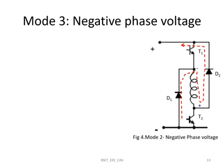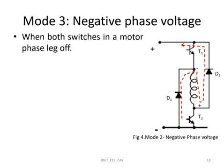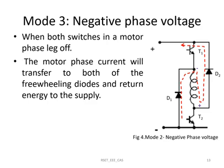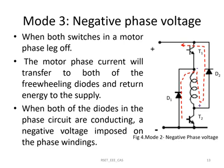In mode 3 (negative phase voltage), both switches T1 and T2 are turned off. The energy stored in the winding during mode 1 is fed back to the supply through diodes D1 and D2, and a negative phase voltage is imposed on the winding. The lower terminal of the winding has positive polarity and the upper terminal has negative polarity, which is why it is called negative phase voltage mode.